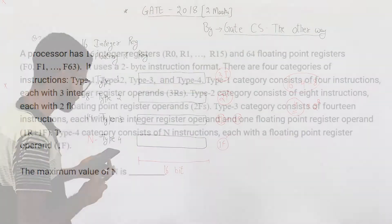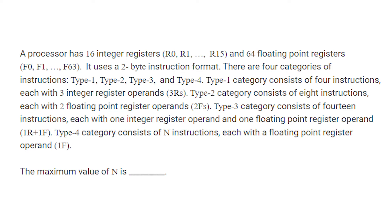Let's see the statement. A processor has 16 integer registers R0 to R15 and 64 floating point registers F0 to F63. It uses a two-byte instruction format. There are four categories of instructions, Type 1 to Type 4. Type 1 consists of 4 instructions each with three integer register operands. Type 2 consists of 8 instructions each with two floating point register operands. Type 3 consists of 14 instructions each with one integer and one floating point register operand. Type 4 consists of N instructions each with one floating point register operand. The maximum value of N is what we need to find.